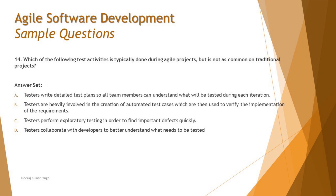Option B says: testers are heavily involved in the creation of automated test cases, which are then used to verify the implementation of requirements. We discussed in Chapter 2 that agile tries to achieve maximum automation — from initial executions to regression test suites — with 70 to 80 percent of work automated. In traditional models, we don't seek that level of automation; it's sometimes even optional. But let's cross-check C and D as well.